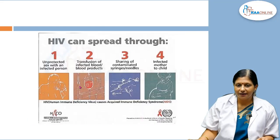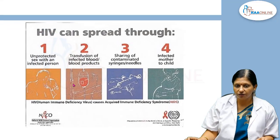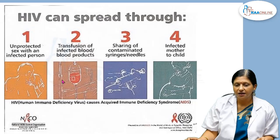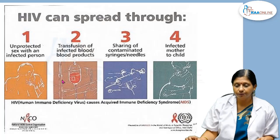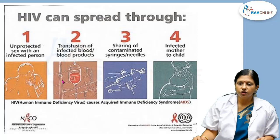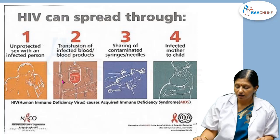How does HIV spread? It spreads through unprotected sex with an infected person, via transfusion of infected blood and blood products, by sharing contaminated syringes and needles during IV injections and tattooing, and from mother to her baby. Today we will focus on prevention of HIV transmission from mother to the baby.